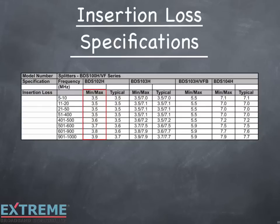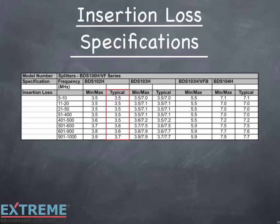The column next to that is labeled typical. These are the specification numbers that you would typically see from the majority of these devices in the field. Notice that the insertion loss at five megahertz is 3.5 dB and 3.7 dB at one gigahertz. Over the entire frequency band, it only loses two tenths of a dB. Most passive devices have minimal loss across the frequency band, and that is why we refer to them as a flat loss device.